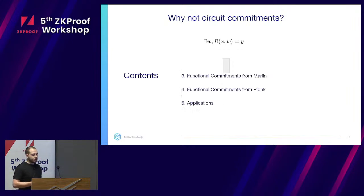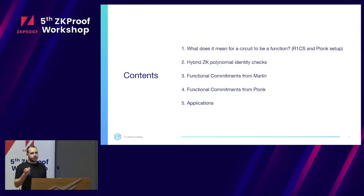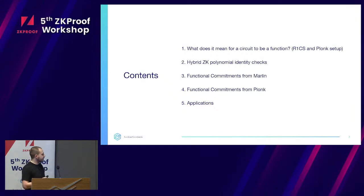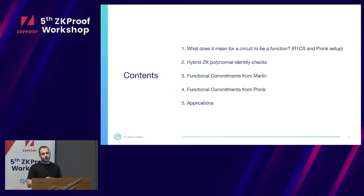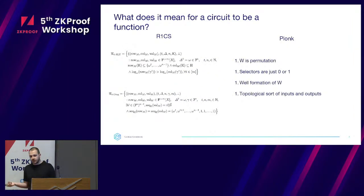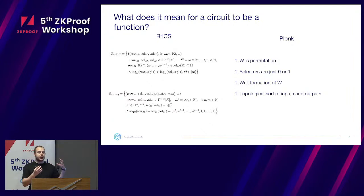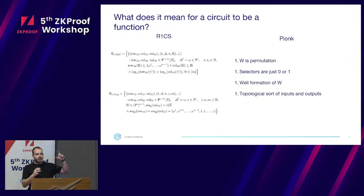We need to discuss what it means for a circuit to be a function — how to introduce the necessary restriction. For both R1CS and Plonkish arithmetizations, it's enough to show that every witness in a trace is uniquely determined by the public inputs, with no private inputs. If every witness in the trace is uniquely determined from the public inputs, you have a function, because for the same inputs you will always have the same output.